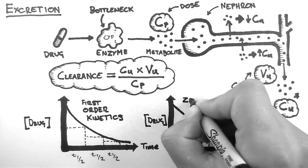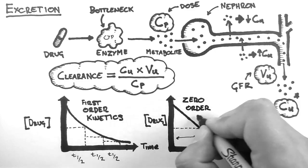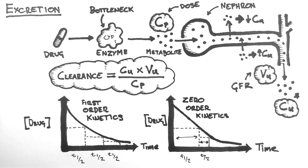When a drug behaves like this, we call it zero-order kinetics. Drugs with zero-order kinetics are more easily overdosed because the rate of excretion doesn't increase with increasing dose.